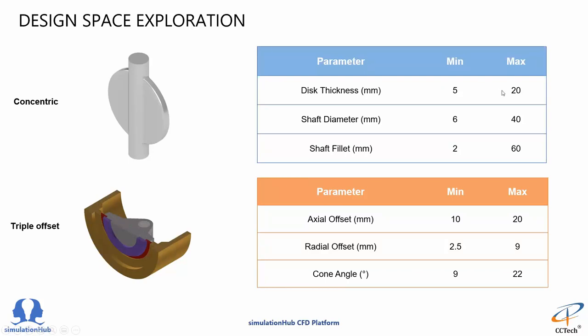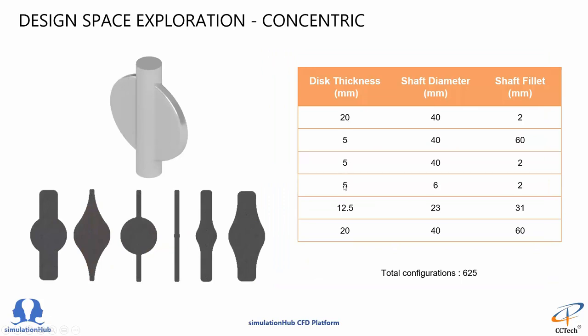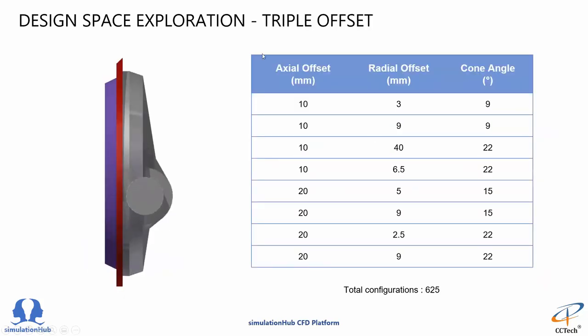We then identified the geometrical limits of each parameter and split that into a range of five steps. We kept on splitting the ranges to five steps and we got a total configuration of 625, that is five per parameter raised to four. I'm just showing you some 6 to 7 parameters here on the screen. Similarly, the same amount of configurations appeared in triple offset butterfly valve as well.